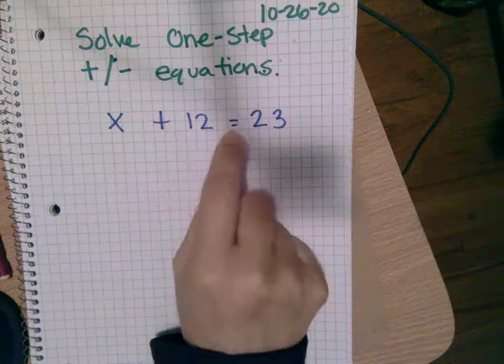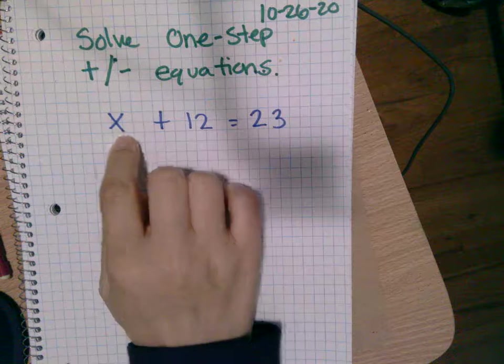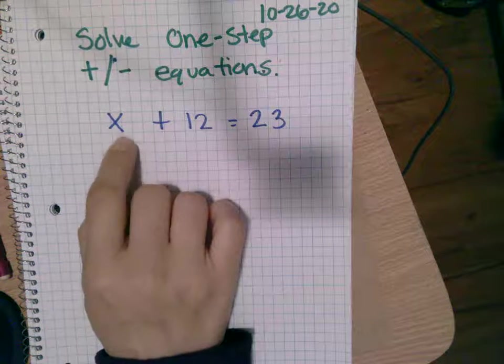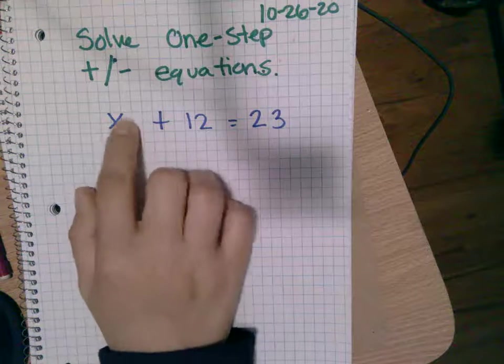Okay, so this is called an equation because it has an equal sign. It has a variable x, and we want to know what x is equal to. What's this magical number?